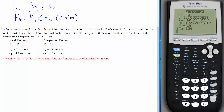This is H1. So that's the local restaurant. The competitor, we want to check if the local restaurant waiting time is less than competitor restaurant waiting time. Okay, again, this is a two-sample t-test.